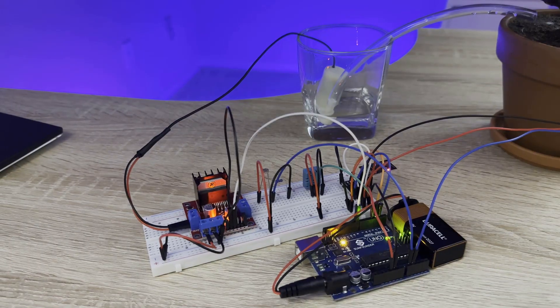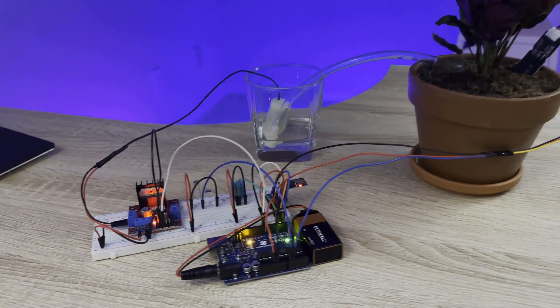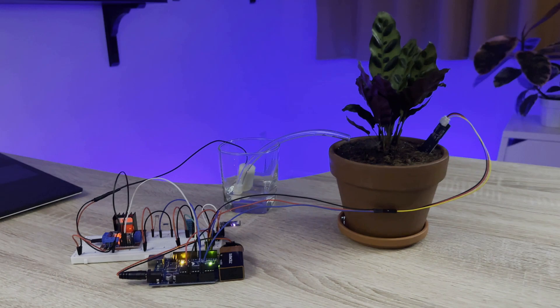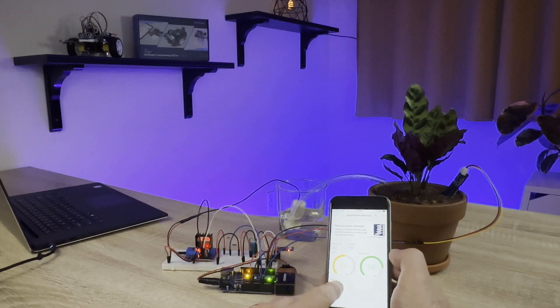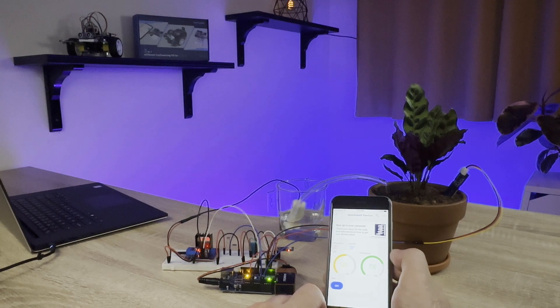Build a plant monitor that tracks the temperature, humidity, light intensity, and soil moisture, and displays it on your smartphone so you can keep your plants watered remotely.